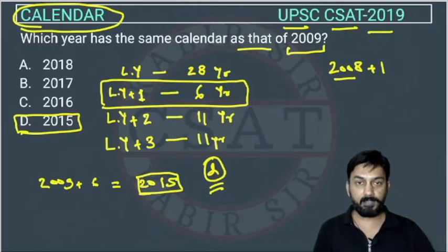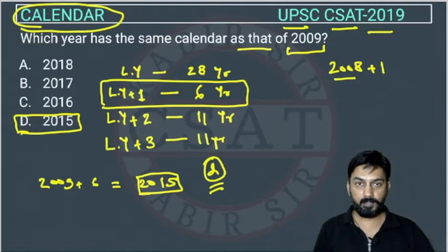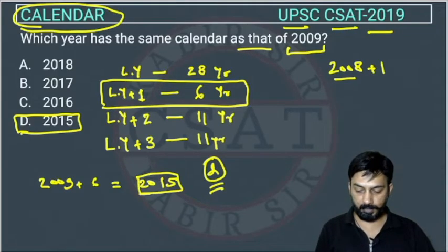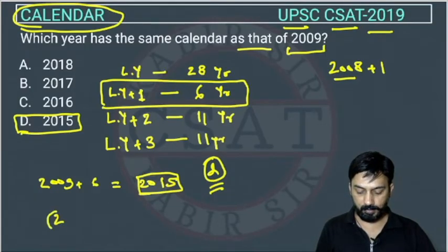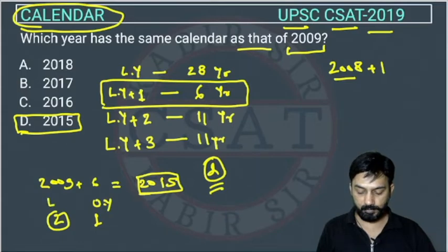Why does this happen? Because of odd days. In a leap year we have two odd days, and in an ordinary year we have one odd day. Because of that, this pattern occurs.